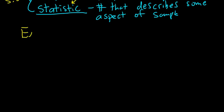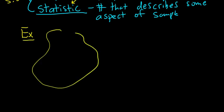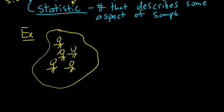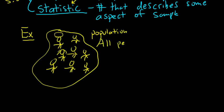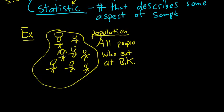Let's say we have a population — let's use people because they're easy to draw. We'll make it all people who eat at Burger King. These are all the people in the entire world who eat at Burger King, and maybe we're interested in their average weight. We call the average the mean in statistics, so we want the mean weight of all people in the entire world who eat at Burger King.